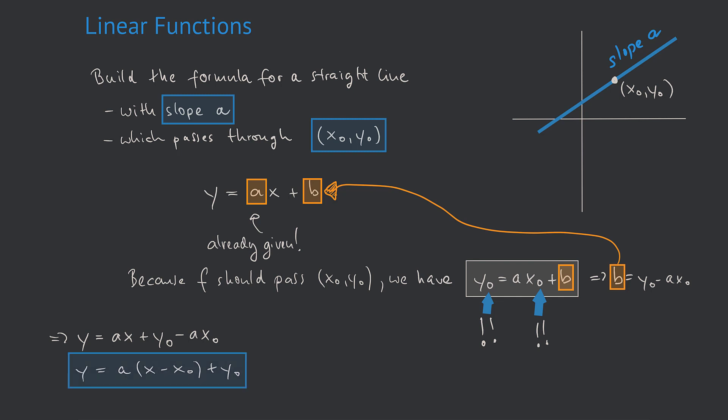Complete this with y, and voila, we're done. That is the formula for the straight line with slope a and passing through the point x0, y0. This formula has a name. It is called the point-slope formula.